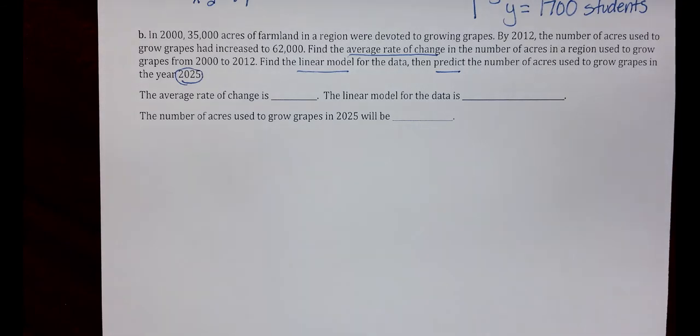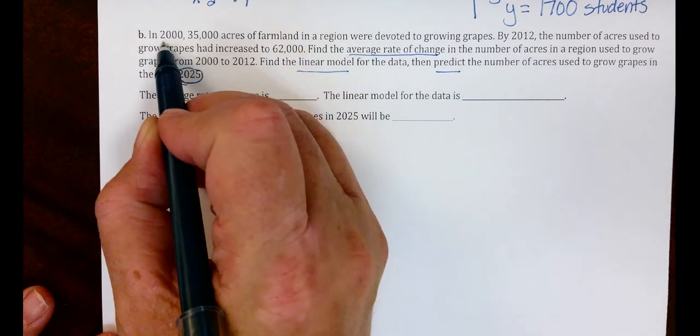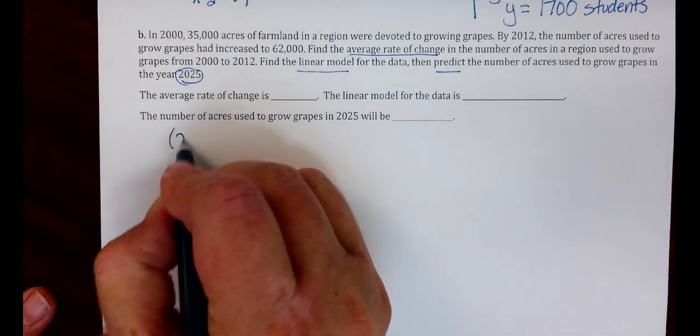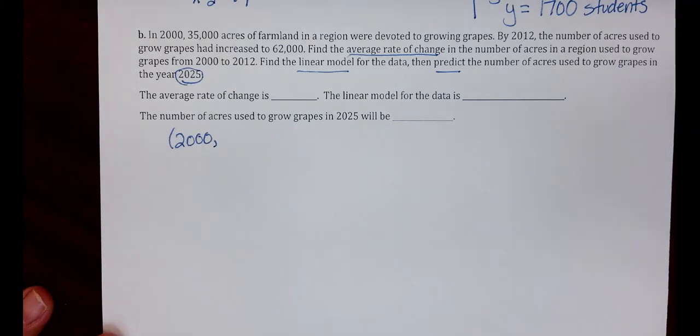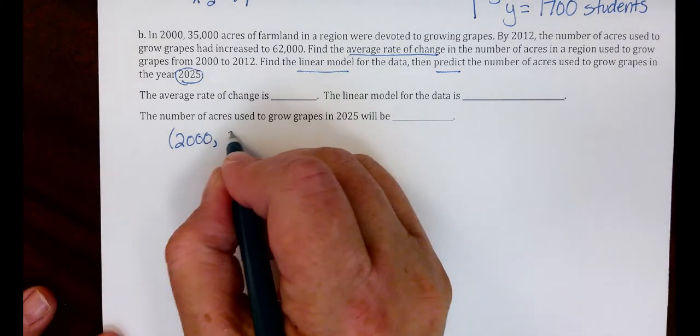Our average rate of change is the slope. To find the slope, you will need two points. Let's pull that information from our problem. We have in 2000, that's our X value, we have 35,000 acres. That's our Y value.